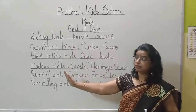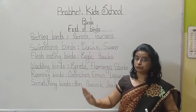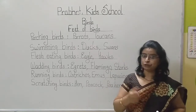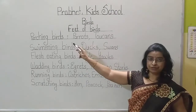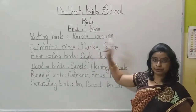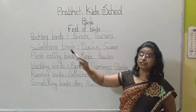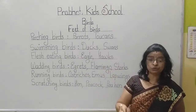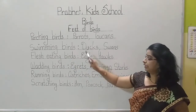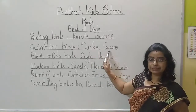So this is all about the feet of birds. In today's period, we discussed the feet of birds. Perching birds — examples are parrots and toucans. Another type is swimming birds, also known as water birds found in the water — examples are ducks and swans.